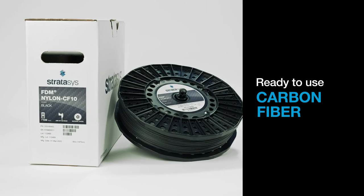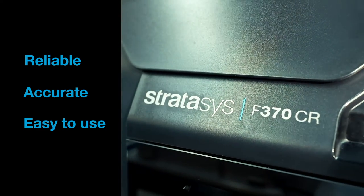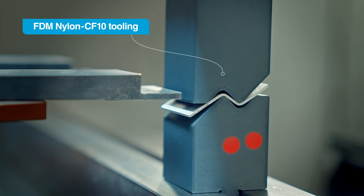Unlock the potential of carbon fiber reinforced thermoplastic on the easy-to-use F123 CR series 3D printers with FDM Nylon CF-10 material.